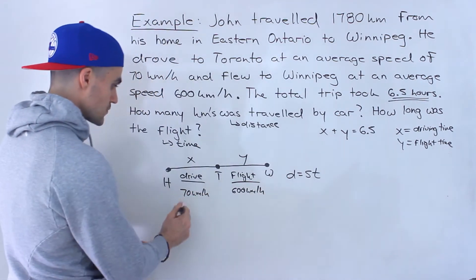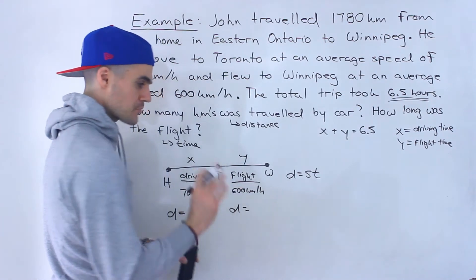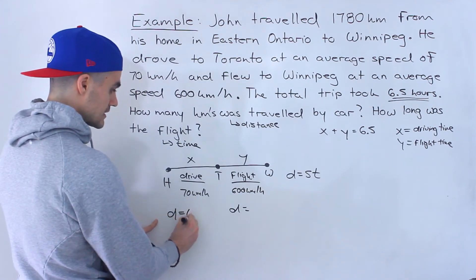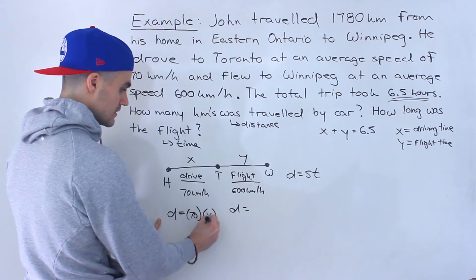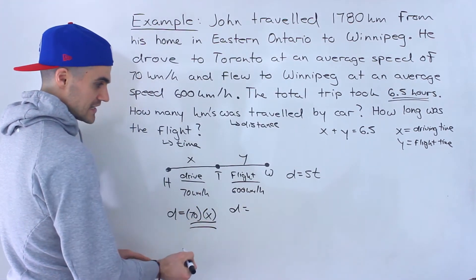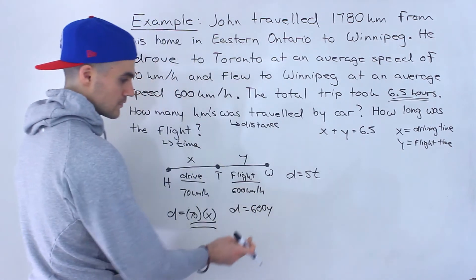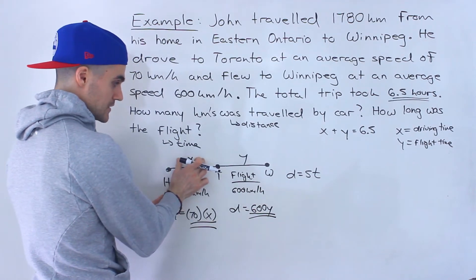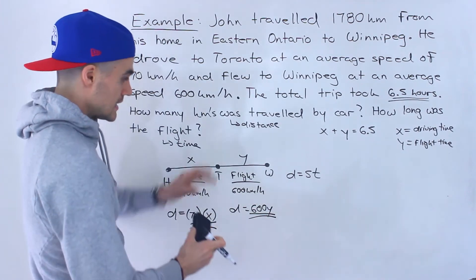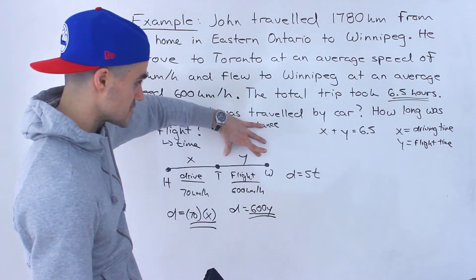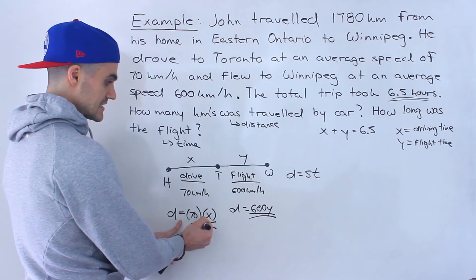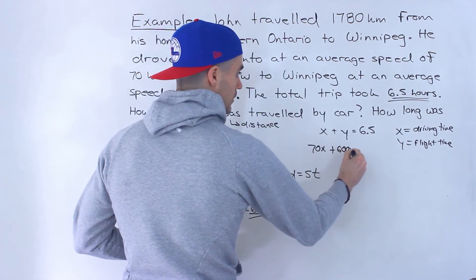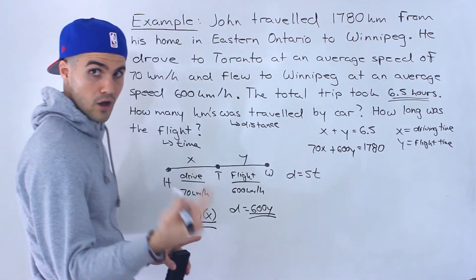We can create distance expressions for the distance driven and the distance flown using speed times time. The distance driven would be 70 times x, so 70x. The distance flown would be 600 times y, so 600y. Since the total distance is 1,780 kilometers, that gives us: 70x plus 600y equals 1,780. That's the second equation.